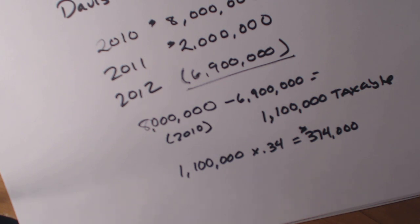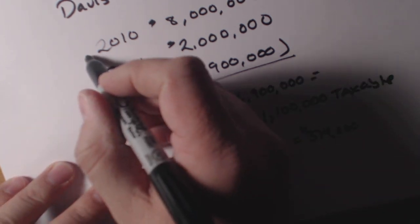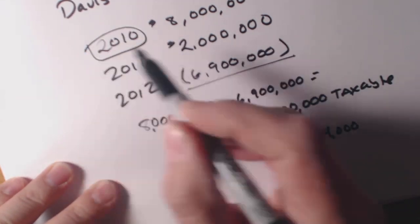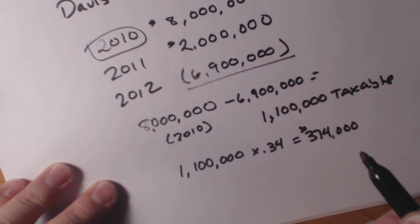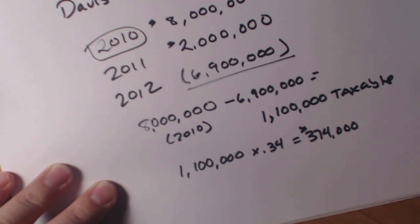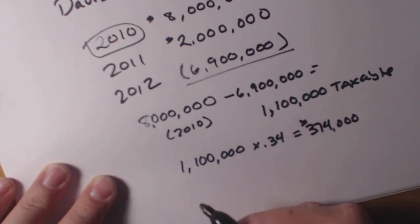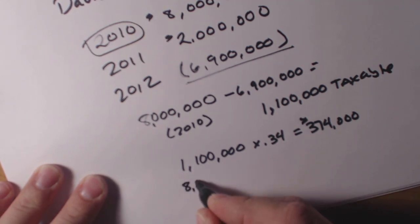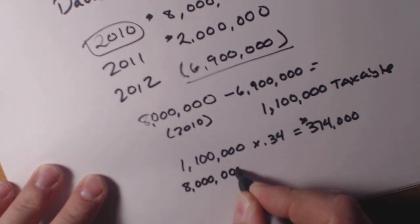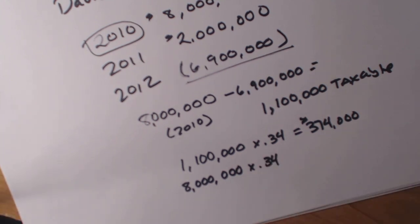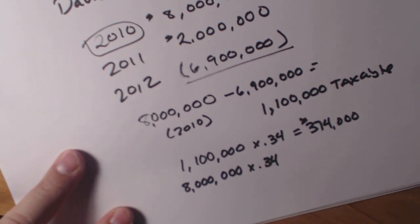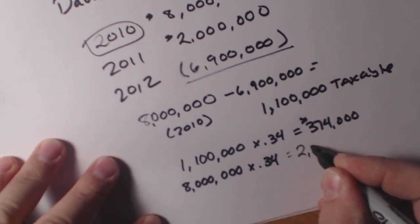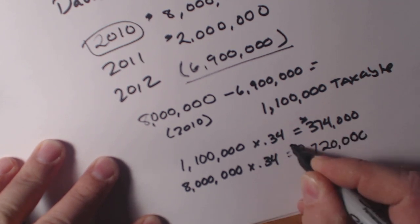So what the company would then do is amend their taxes for 2010, showing the loss as it's carrying back, and then they would get some money returned to them. How much money would they get returned? Well, if you take 8 million times 0.34 — this is what they originally paid — 8 million times 0.34 is equal to $2,720,000 is what they paid.